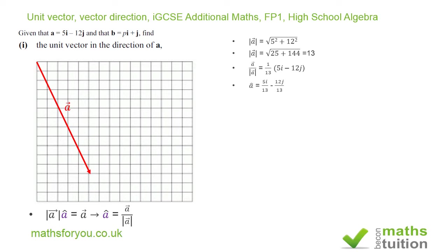Now we can write this as 5i over 13 minus 12j over 13. What I've done here is to show the unit vector: 5i over 13 minus 12j over 13.